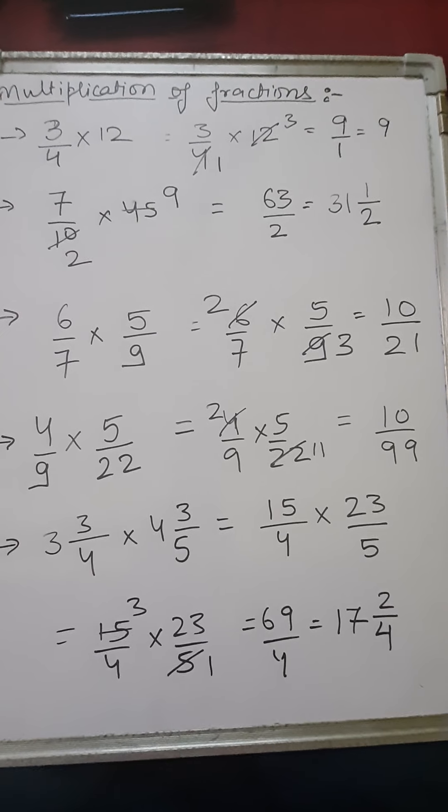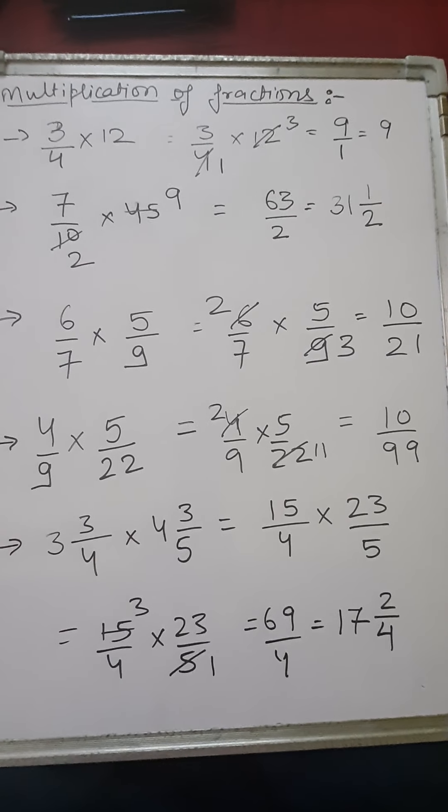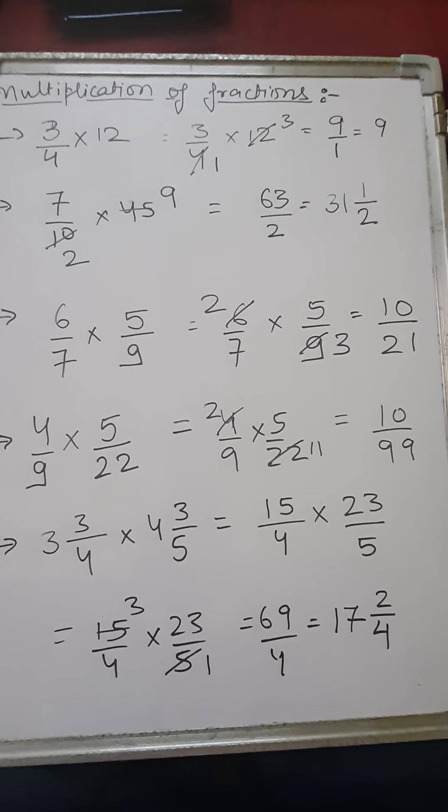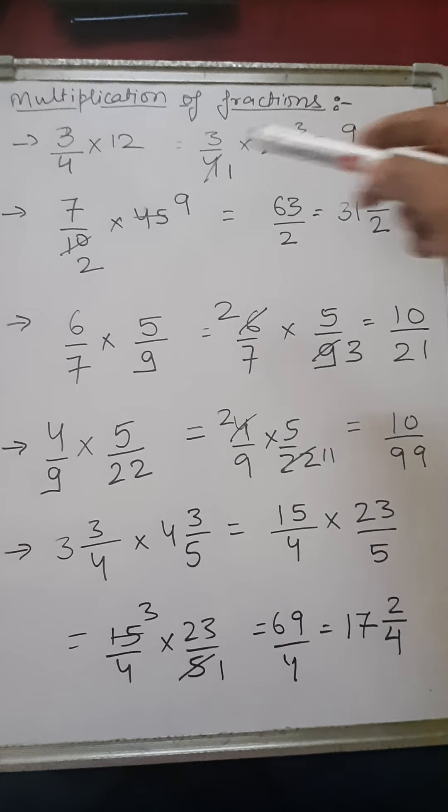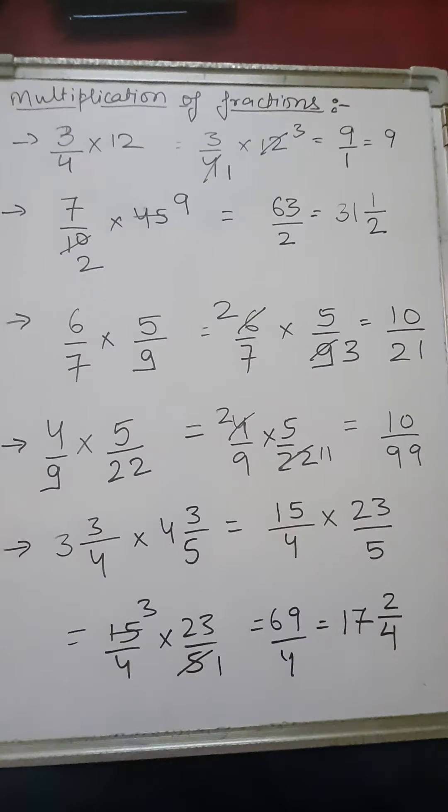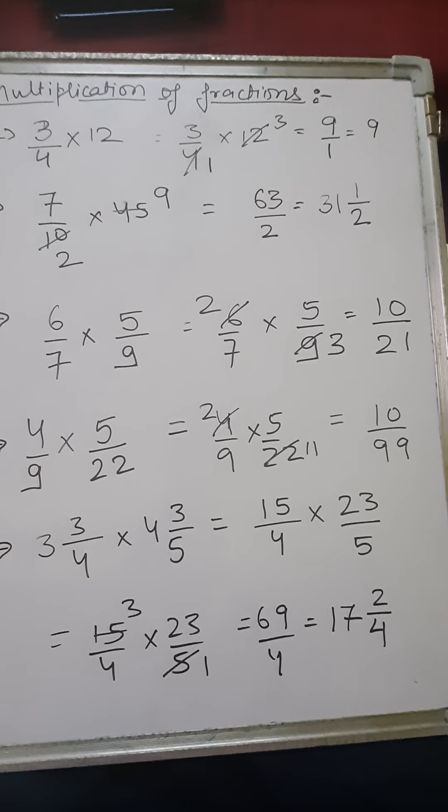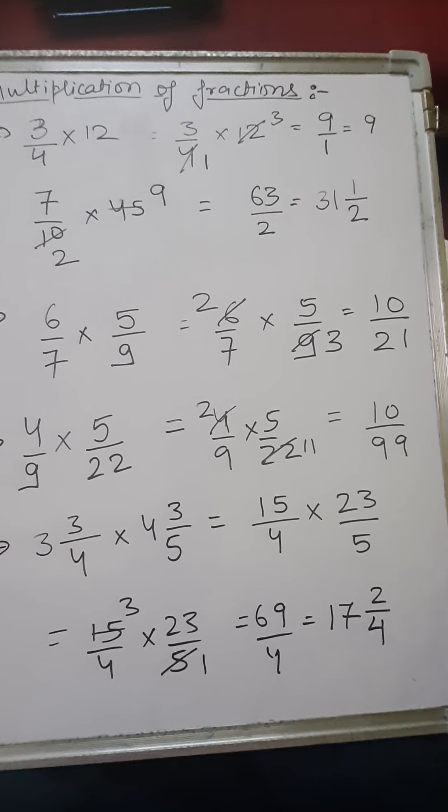Say if you have to multiply 3 by 4 into 12, this is our first sum. Here we are multiplying 3 by 4 into 12. Now if you have to multiply these two terms, what we'll do? 12 is written, that means we can write this 12 as 12 upon 1.